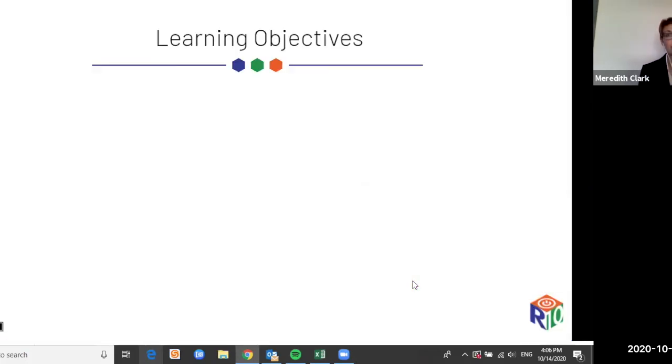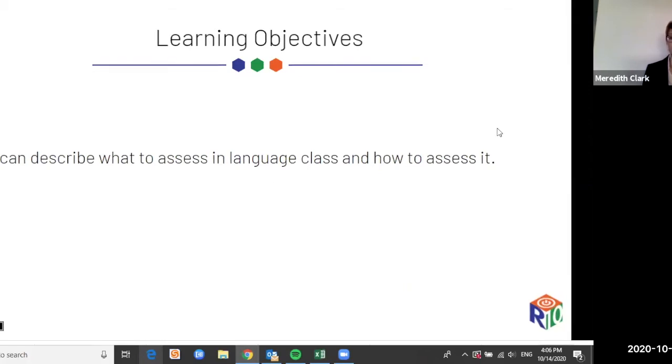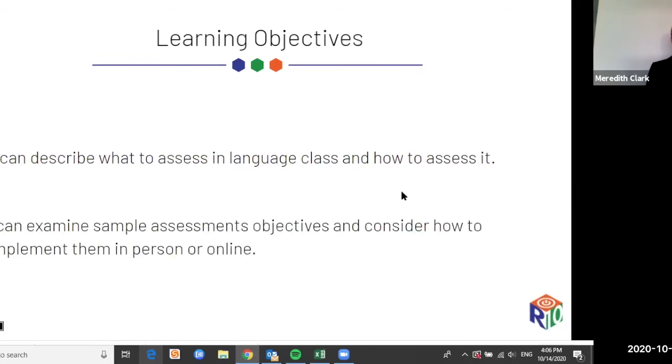After I talk, we're going to break out into zoom rooms and we're going to look at some sample assessment objectives. Then we're really going to dig into how would I administer this assessment online or face-to-face or in a hybrid teaching situation or a concurrent face-to-face and remote learning situation. Then we'll come back and we'll share and discuss and ask questions. Let's quickly check in. Let's start our learning today with a goal. Here's our learning objective. It really has two parts.